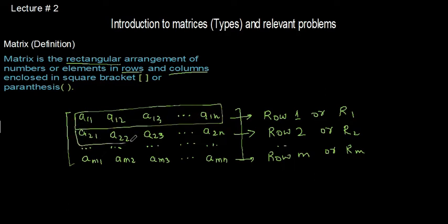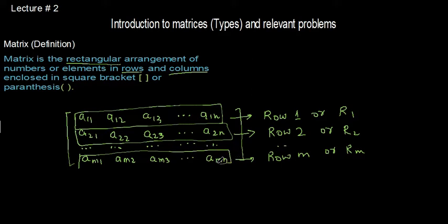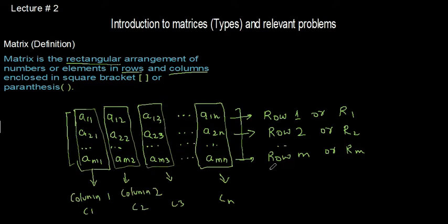Similarly, elements A21, A22, A23 up to A2N indicate the elements of the second row. Finally, AM1, AM2 up to AMN indicate the elements of the Mth row. We can denote row 1, row 2, or row M by R1, R2, or Rm. The vertical arrangement of numbers is called the column. Elements A11, A21 up to AM1 are the elements of the first column, indicated by C1.